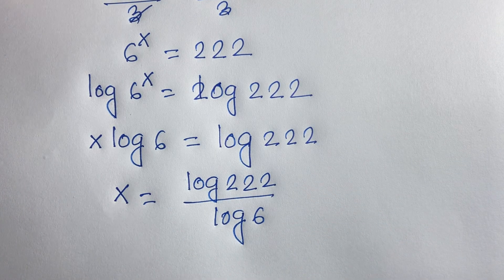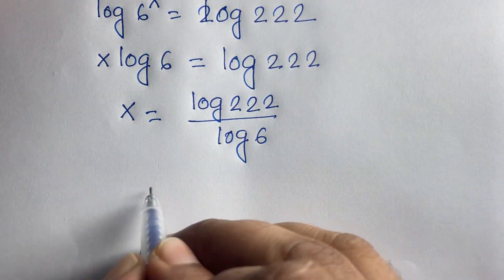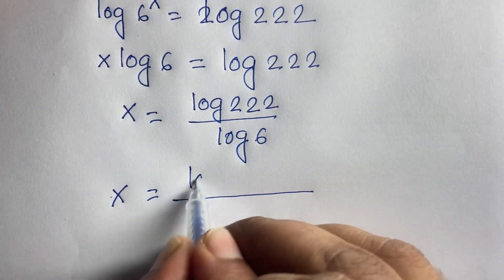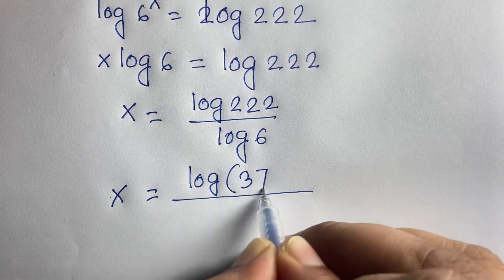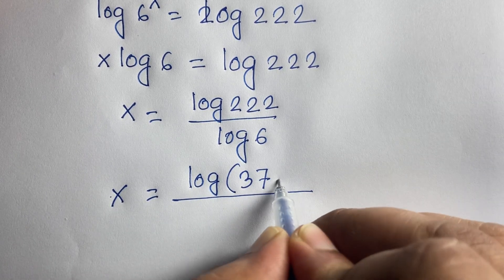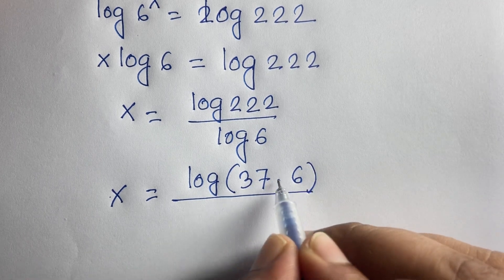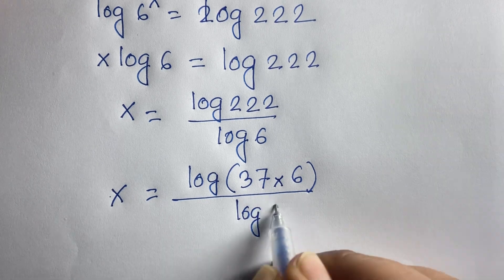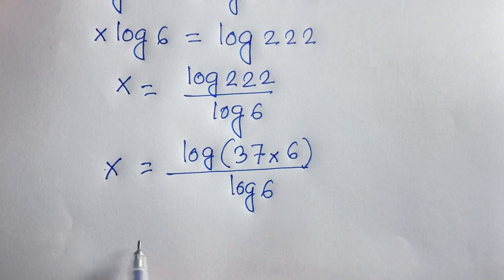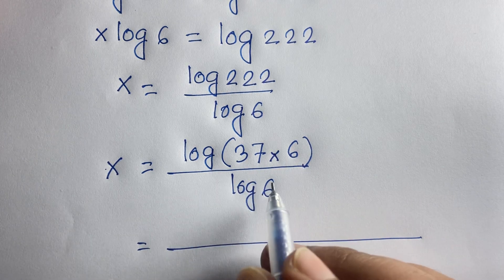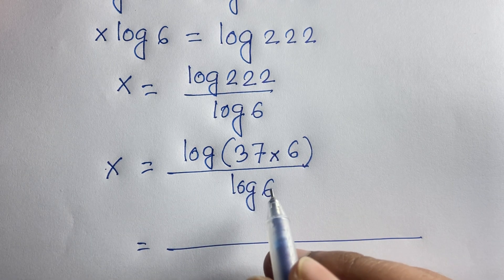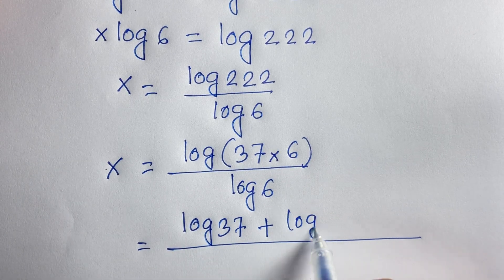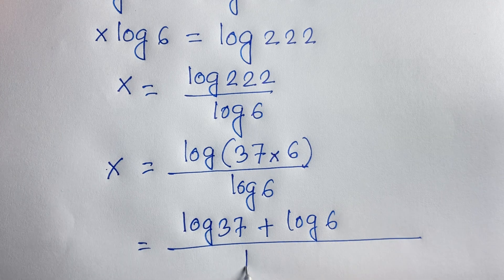Now x is equal to log(222) over log(6). I can rewrite 222 as 6 times 37, since 6 times 37 equals 222. According to logarithm rules, log(a·b) equals log(a) plus log(b), so this becomes log(6) plus log(37), all divided by log(6).